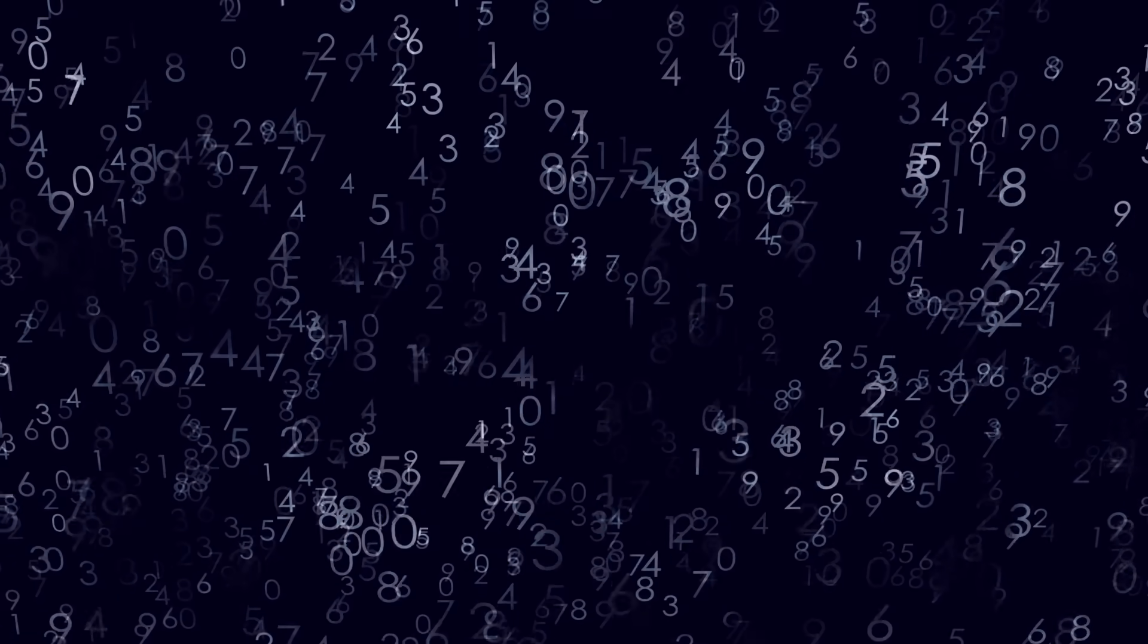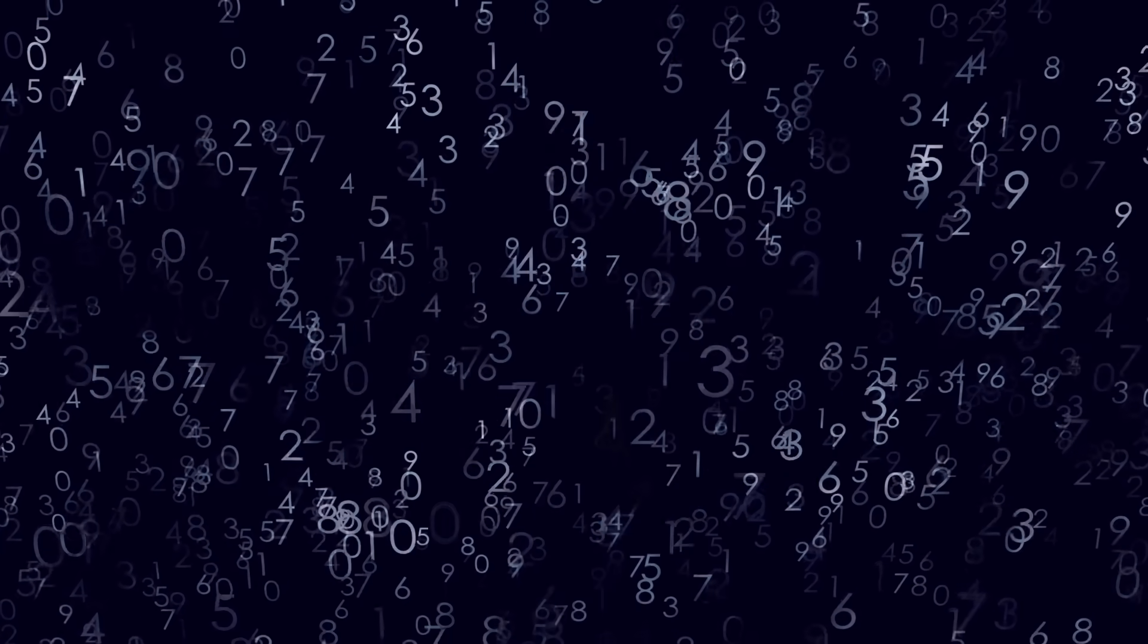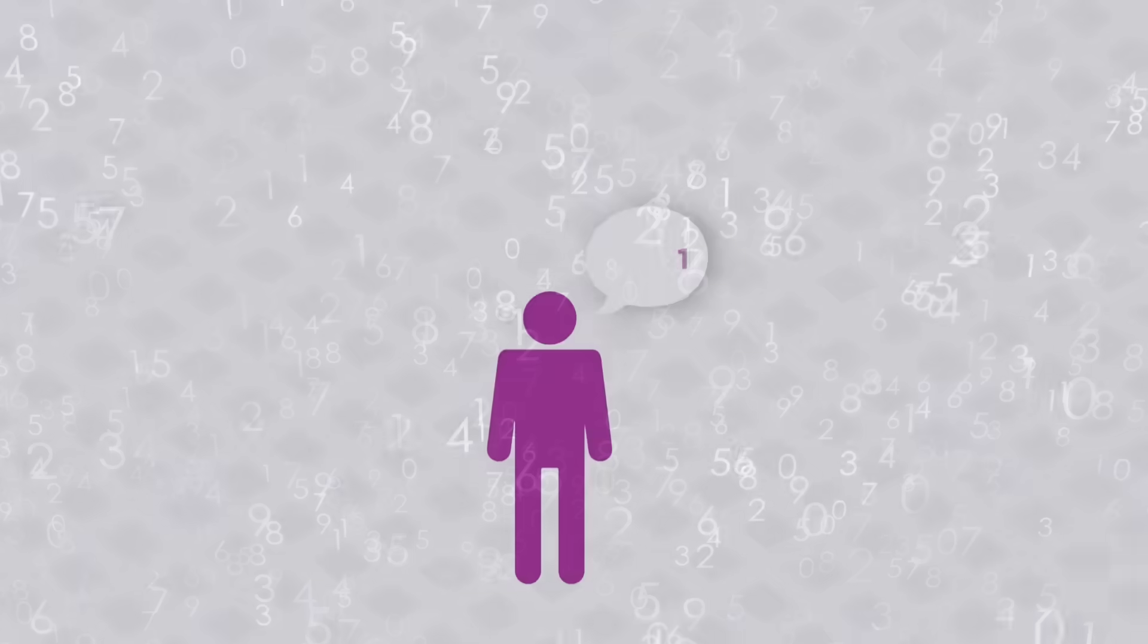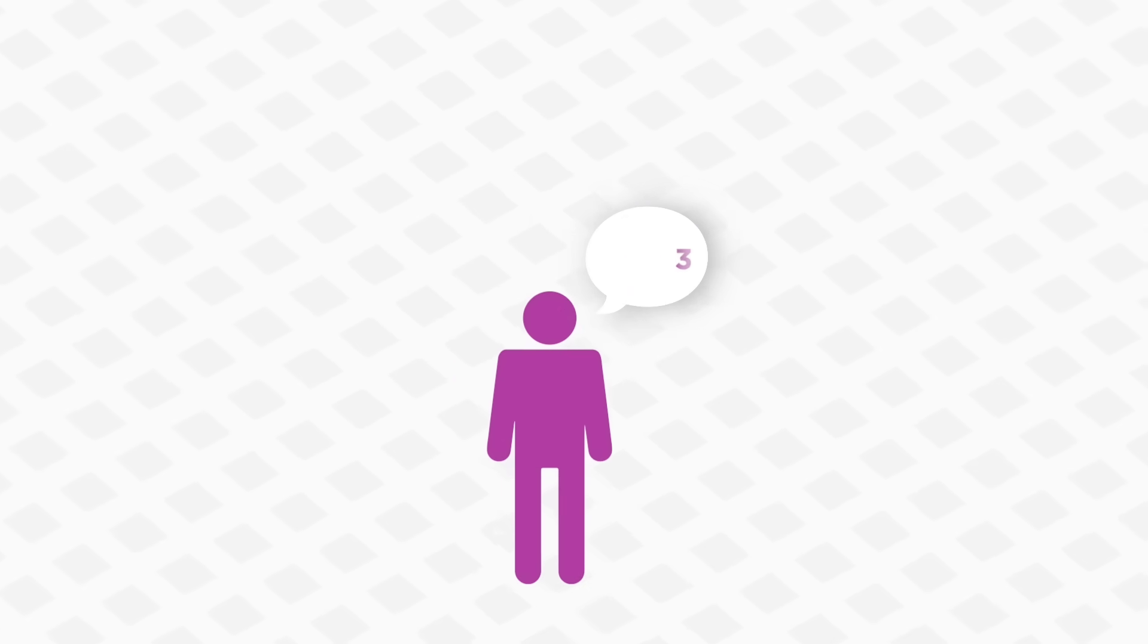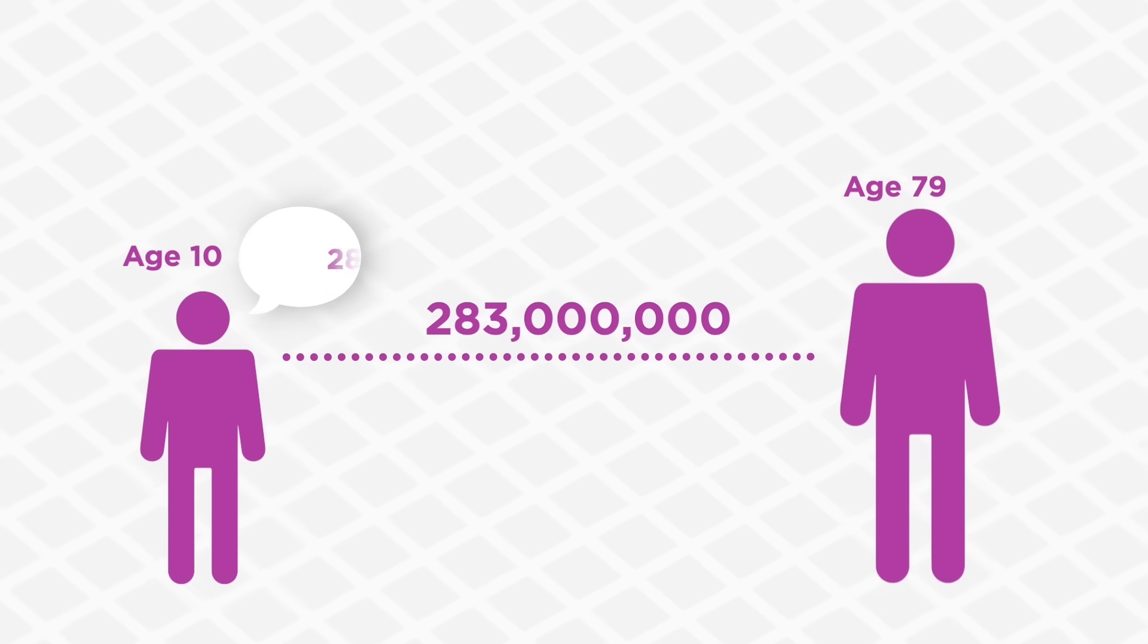Now, obviously that is possible to do, but how far could you actually count to if you dedicated all of your time towards it? If counting to 1 million takes around 89 days, and if you kept up that same pace going on from there, and if you began counting from 1 at the age of 10, then by the time you hit the age of 79, which happens to be the average life expectancy in the United States, you would probably end up hitting somewhere around 283 million.